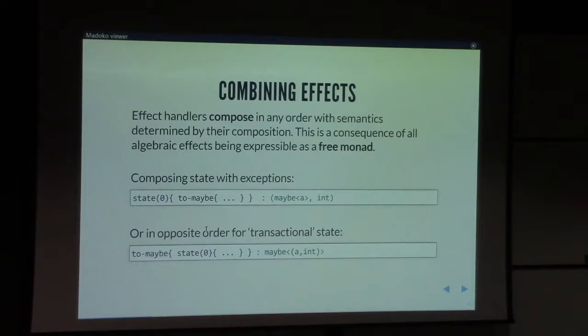Maybe one interesting thing is that because they're all free monads, they compose really well. So I can now compose my state effect with the exceptional effect in two different ways. And it depends how I set up my handler. If I do state over exceptions, I may be, you know, raising an exception or not, and I see the final state. So if an exception was raised, I see the final state at that time. Or it's more transactional. And combining it the other way around, I get maybe a tuple of the final value and the final state or nothing when an exception is raised and no final state.